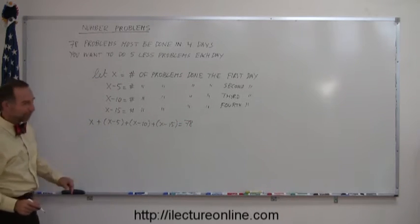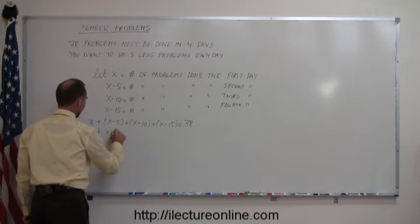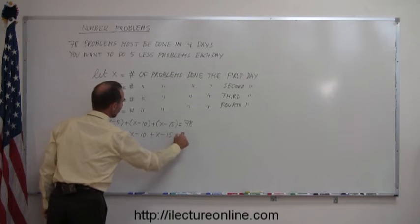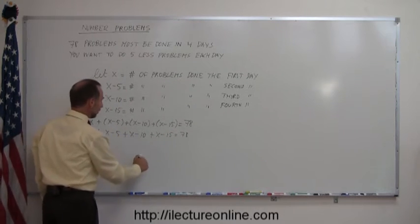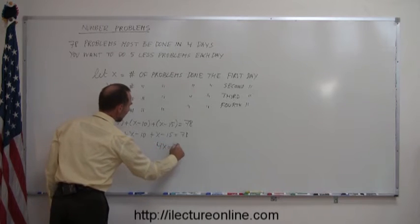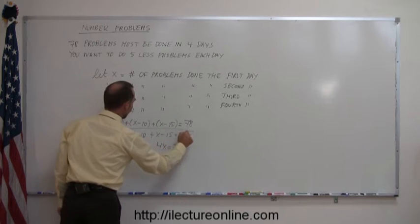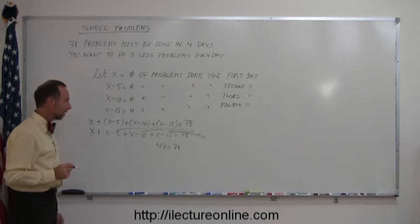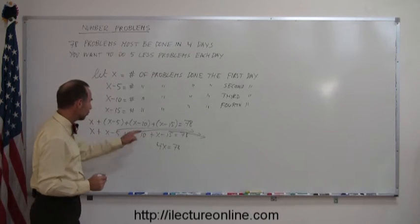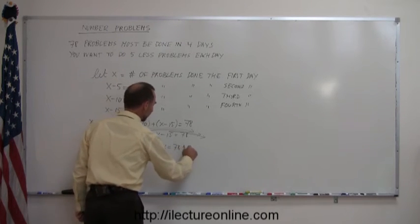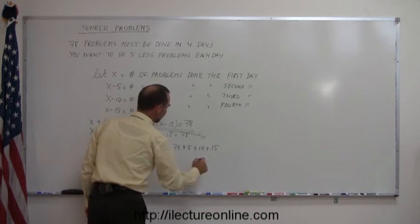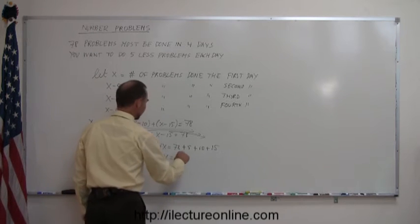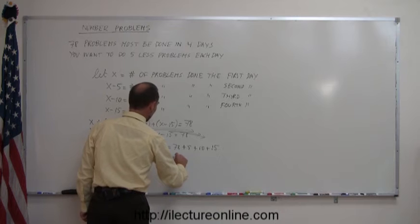First we get rid of the parentheses. So we write x plus x minus 5 plus x minus 10 plus x minus 15 equals 78. We have four x's on the left side, so 4x equals 78. And then we're going to move the minus 5, the minus 10, and the minus 15 to the right side. And of course, if we move things across the equal sign, the sign changes, so this becomes plus 5, plus 10, plus 15. And we add all the numbers together. So we have 4x is equal to, that would be 10, 25, 30, that would be 108.